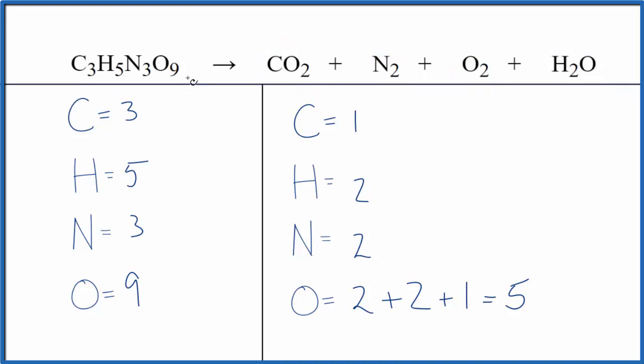The first thing we want to do is count the atoms up. I've already done that. The only thing to be careful with, we have two oxygens here, two here, and then the one in the water. So that gives us a total of five oxygen atoms.